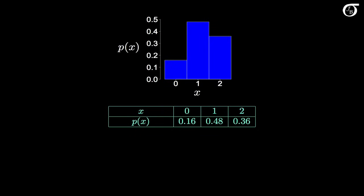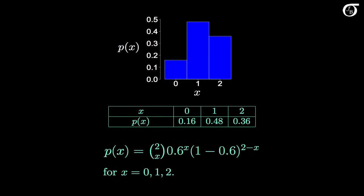So far we've illustrated the distribution of a discrete random variable with a probability histogram or a table, but the table method gets unwieldy if there are many possible values. We often represent discrete probability distributions with a formula that helps us calculate the probabilities. There isn't always a nice simple formula, but many times there is. For the example, we can use a specific formula to calculate the probabilities for x = 0, 1, and 2. This formula is called a probability mass function — a function that yields the probability for each possible value of x, representing the probability distribution in a compact fashion.